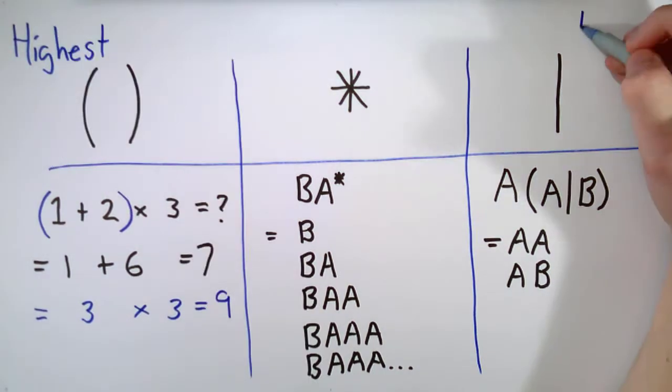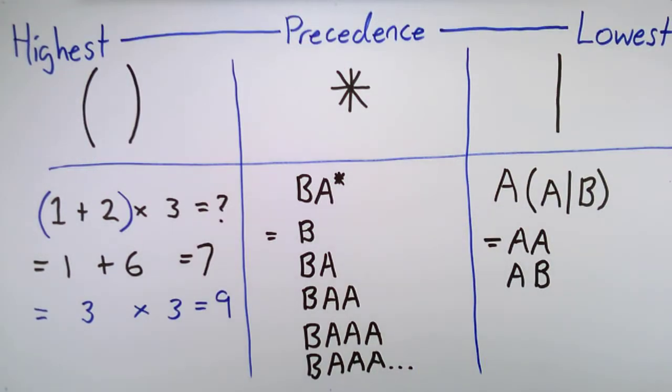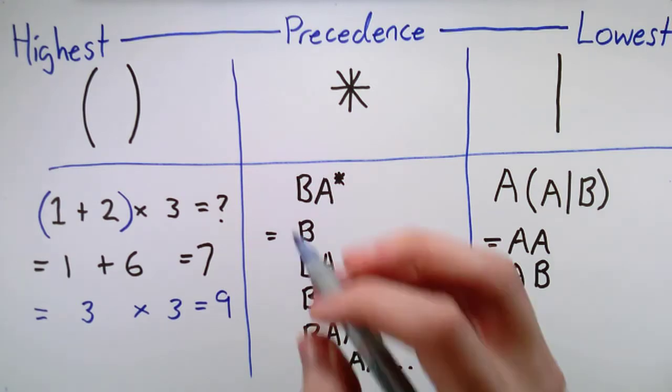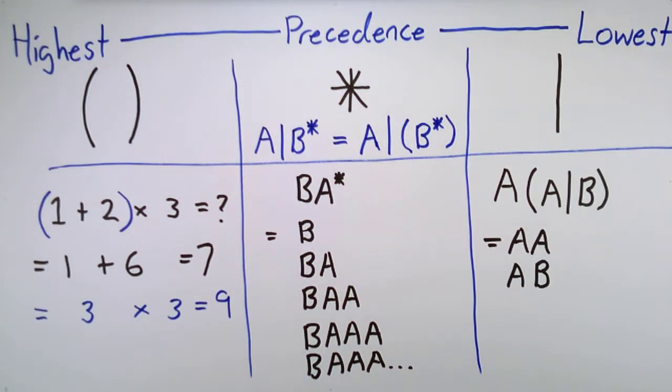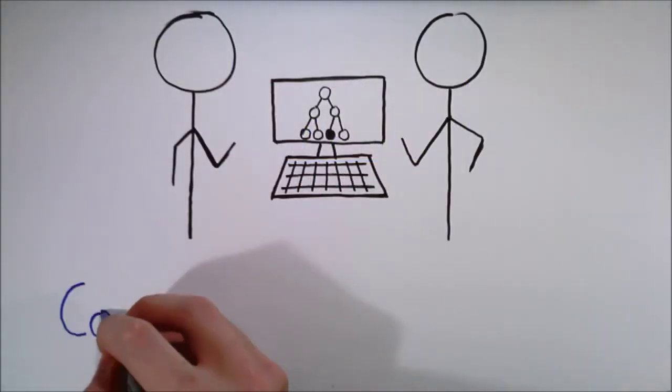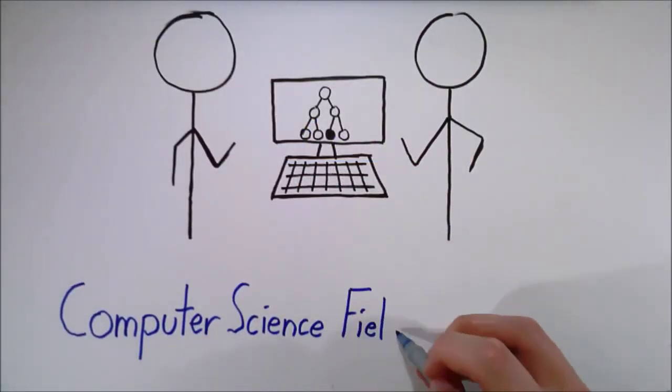Bar has the lowest precedence of the basic regex symbols, so A or B star is the same as saying A or B star, which means you can either match an A or any number of Bs.